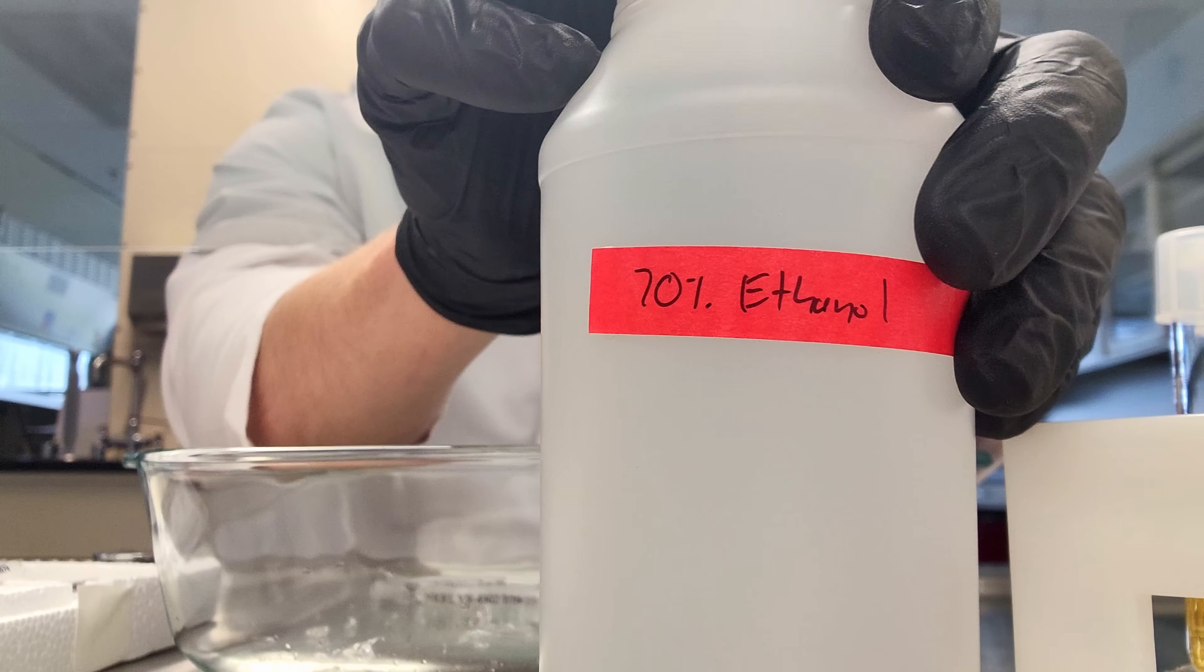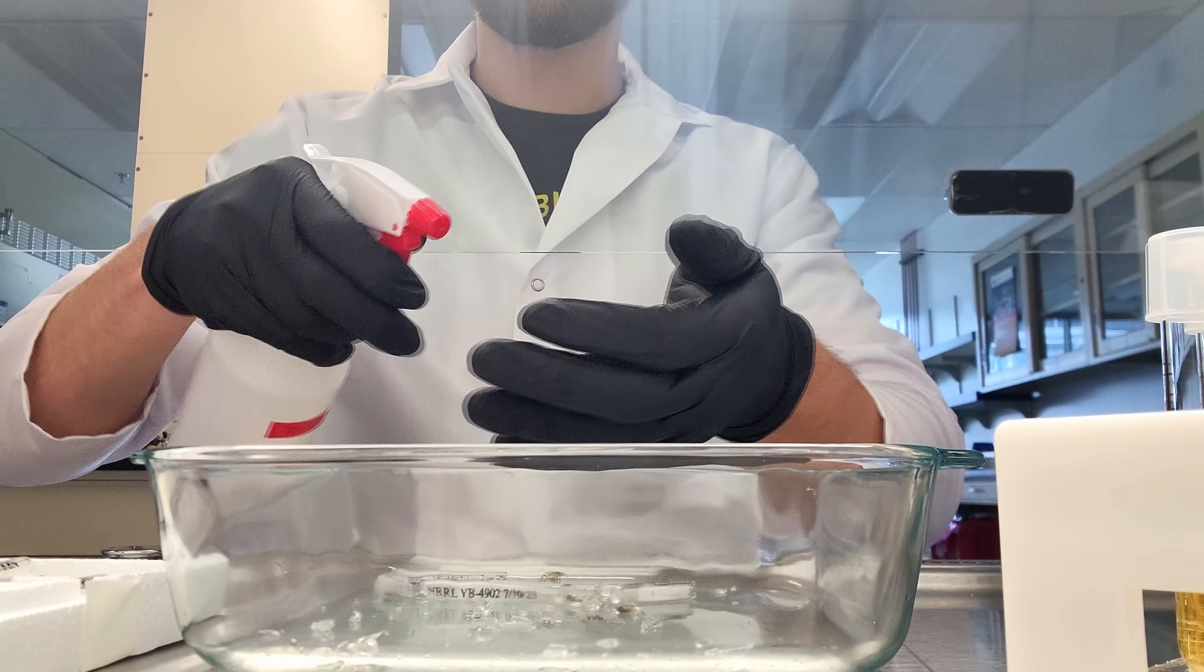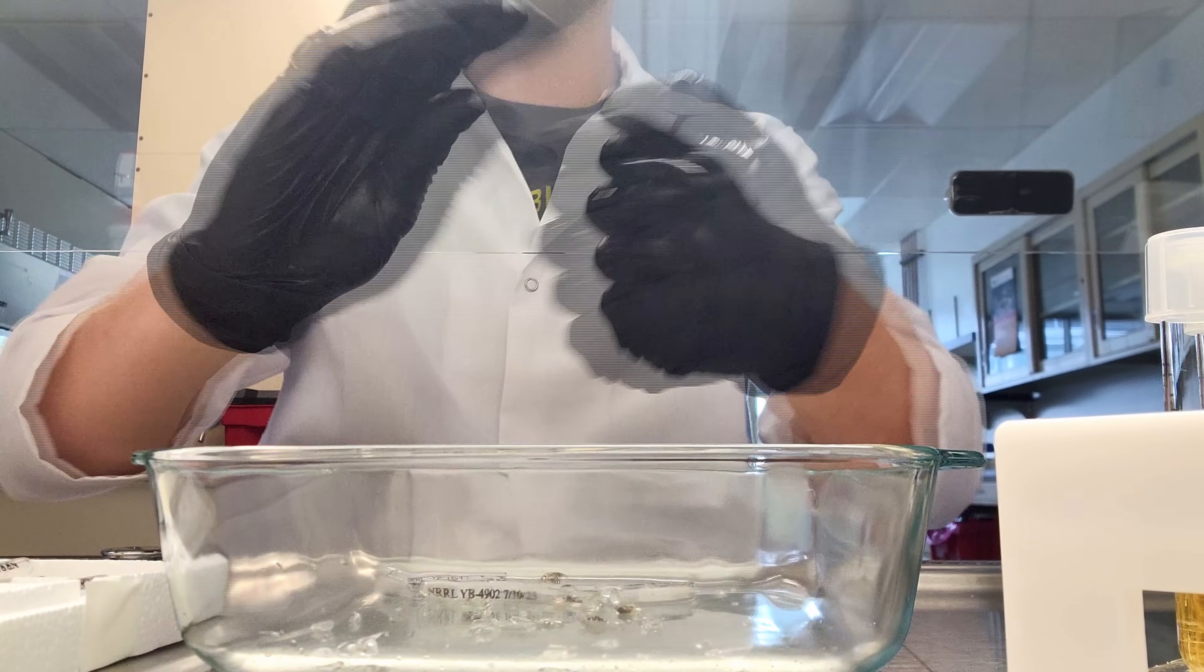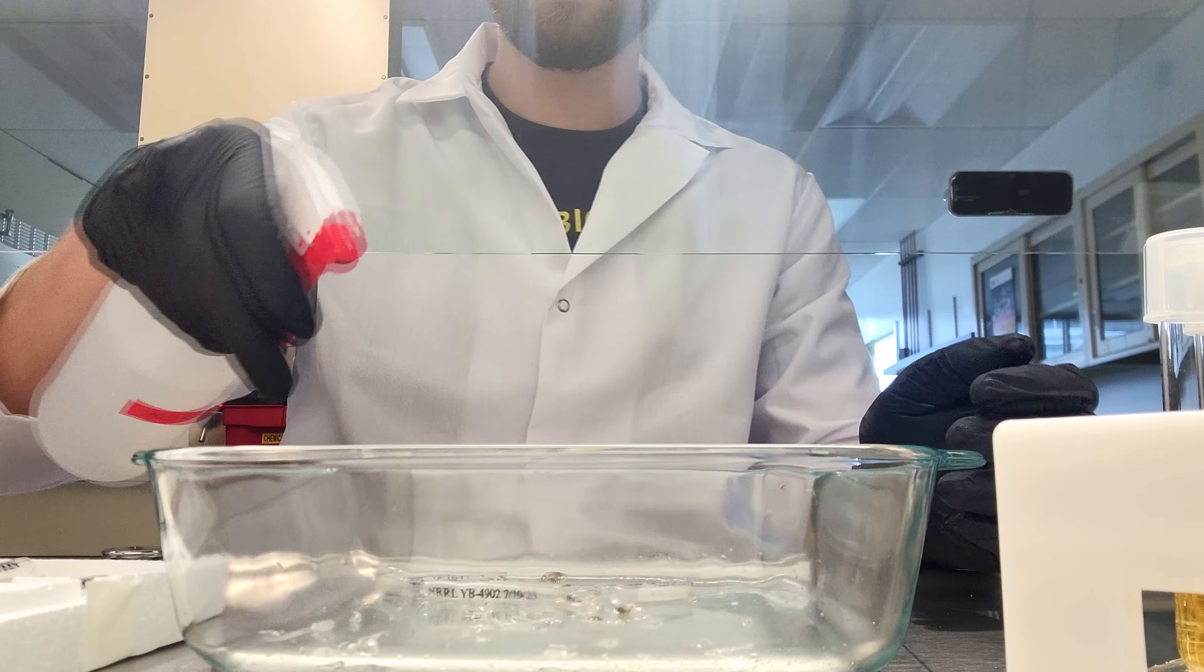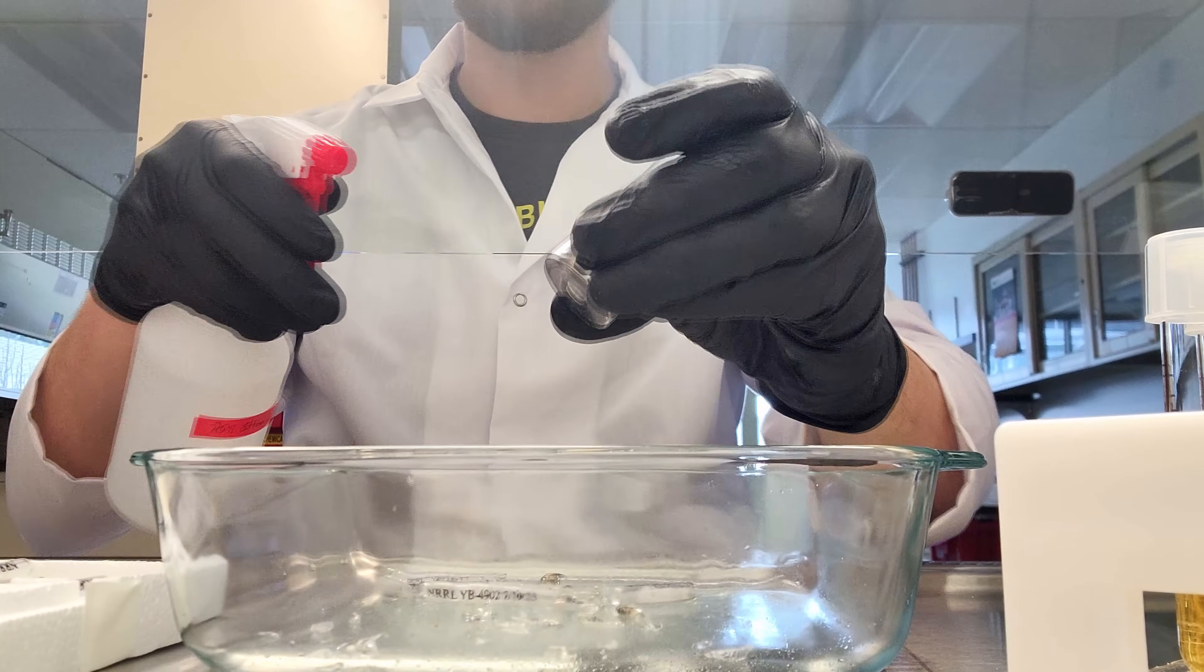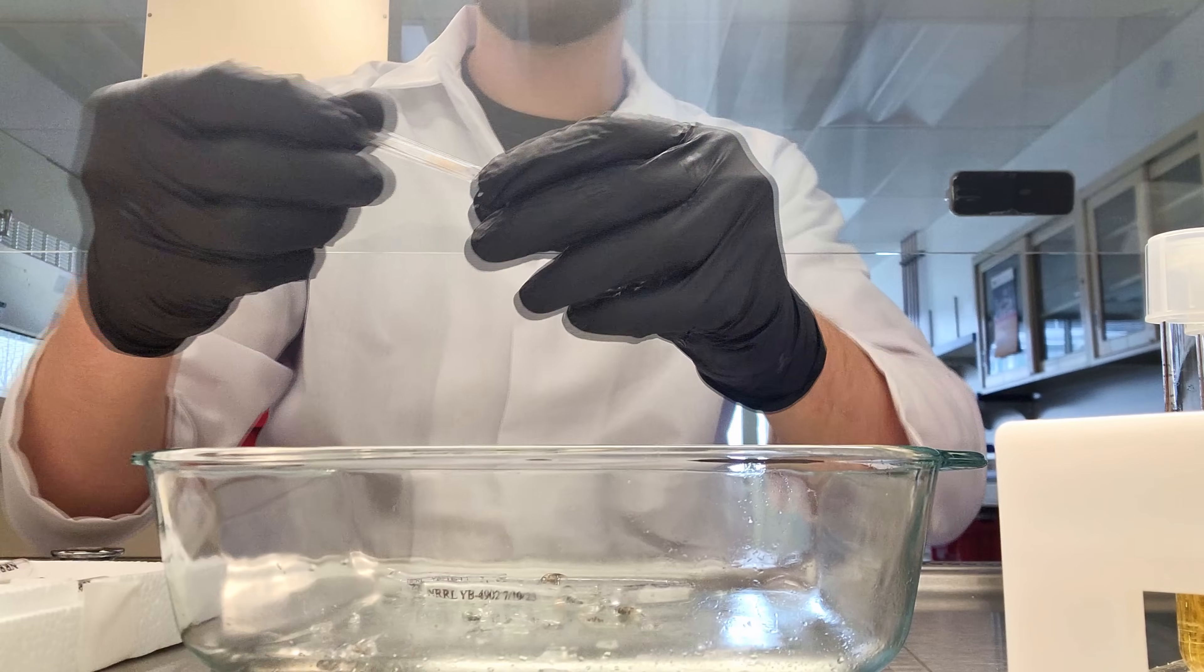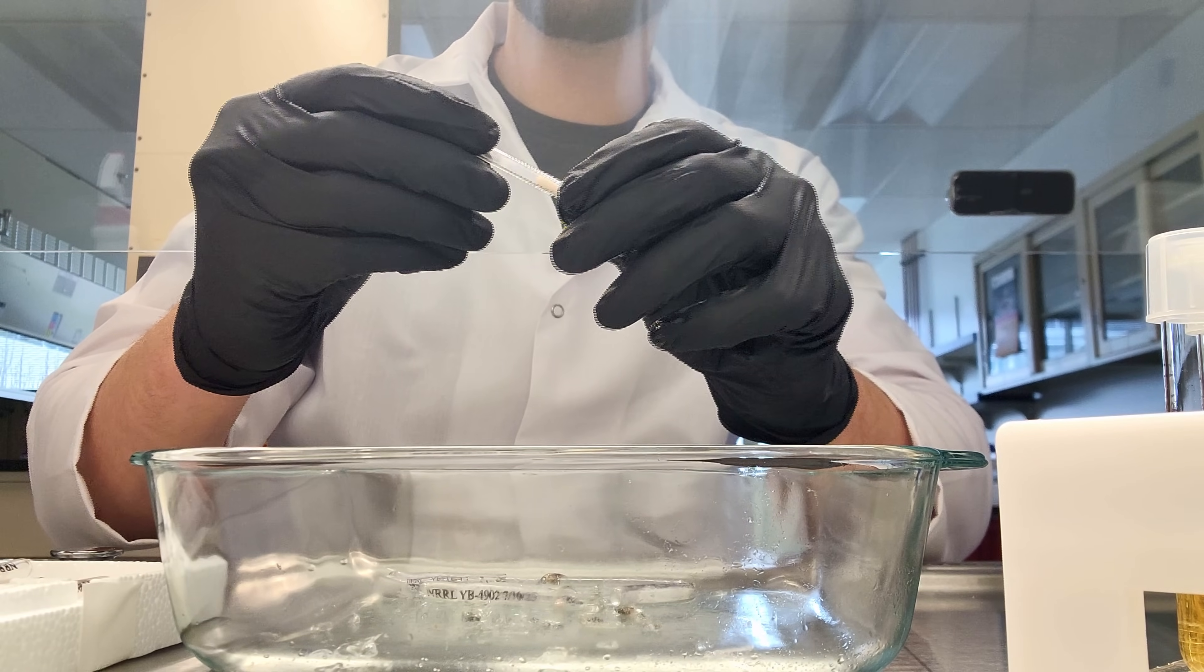Today I'm going to show you how to resurrect cells from long-term storage. Here we have 70% ethanol in a spray bottle, commonly used to decontaminate work surfaces, tools, and hands. We're working in a laminar flow hood to prevent anything from falling into our cultures and petri dishes.